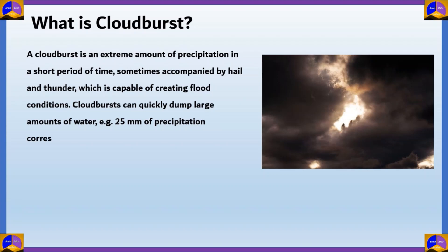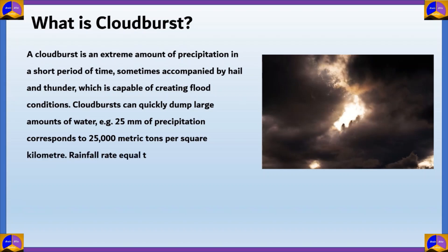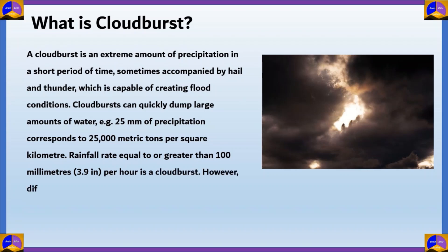Cloudbursts are especially common in mountainous areas. This is probably because the warm air currents of a thunderstorm tend to follow the upward slope of a mountain. The effects of heavy rain are especially striking on mountain slopes because the falling water is concentrated in valleys and gullies. Mountain cloudbursts cause sudden and destructive floods.